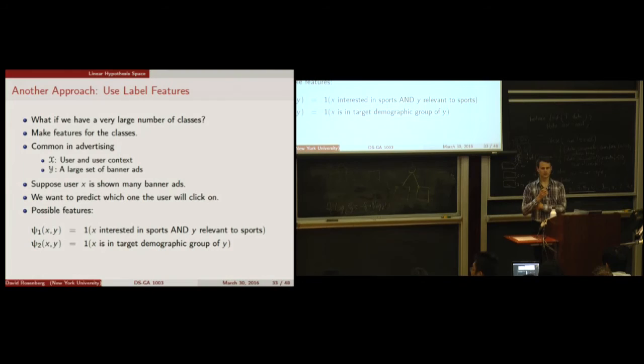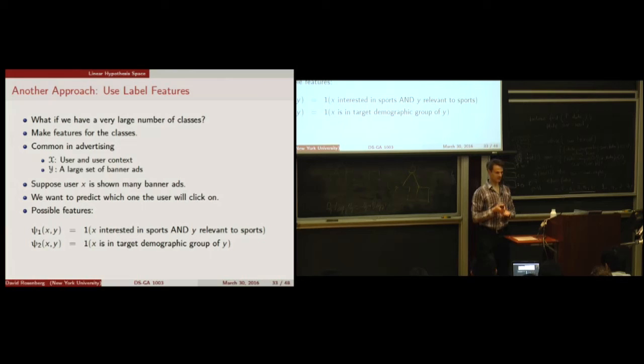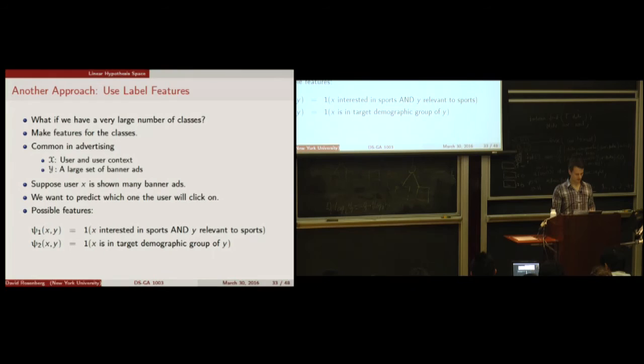Here's another approach — more intuitive for huge output spaces. In advertising, the input is a user and their context, and we want to show ads they'll click on. Rather than learning separate parameters for every ad, we can featurize the ad itself — describe the label in a certain way.